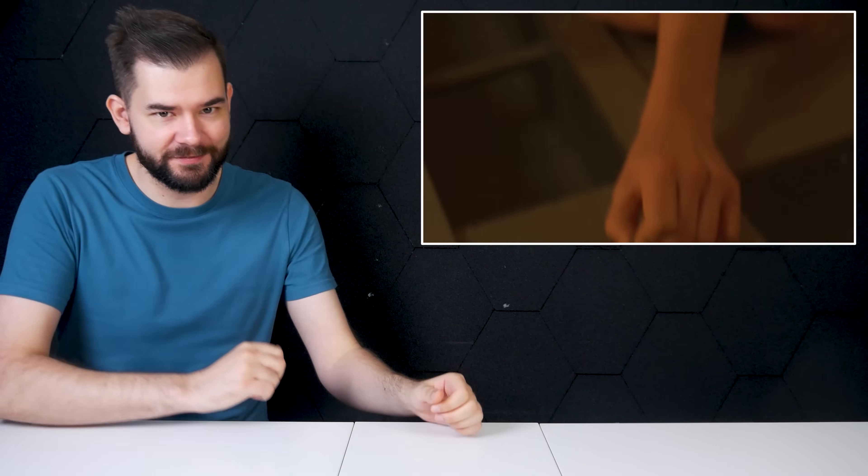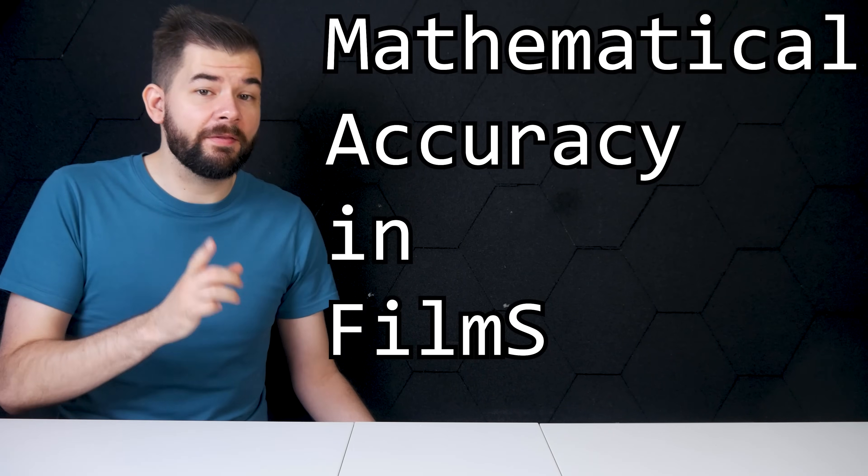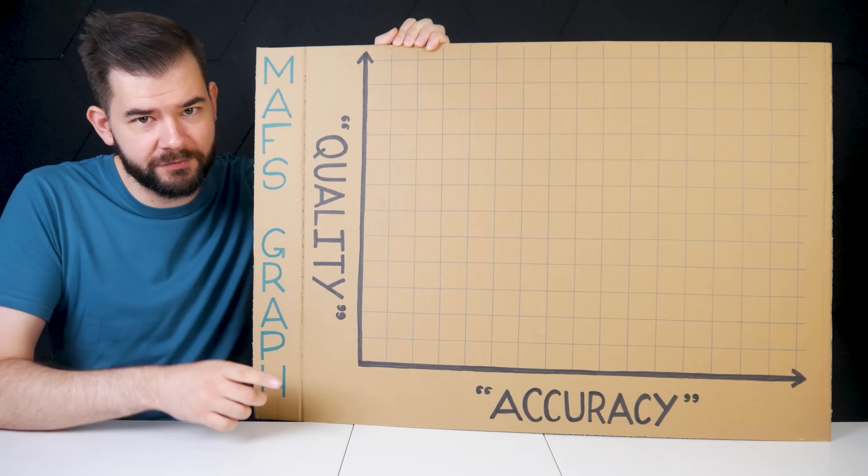But how accurate is it? This film really surprised me, so in this episode of Maths, Mathematical Accuracy in Films, we're going to look at whether the mathematics of Cube checks out, but also how plausible it is that the characters would even be able to work out the required patterns in the first place. After a short discussion of the film overall, we'll rank it on our two-axis plot. I hope you enjoy.